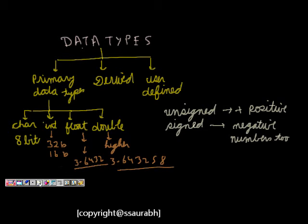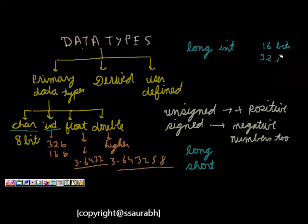Then we have two more keywords which are long and short. Let's say that int is there. We can have a long int which means it is now a bigger number than just an int. If int is 16 bits, long int can become a 32 bit number. Similarly, if int is 32 bit on some computer, short int will be 16 bits.